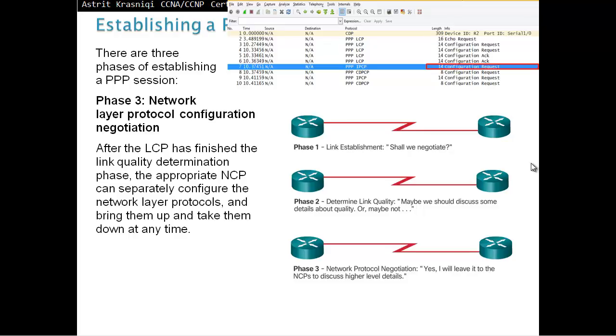So, phase 1 is link establishment. Shall we negotiate? The LCP. The phase 2 is optional. Determine the quality of the link. Maybe we should discuss some of the details about quality or maybe not. In phase 3, we bring the NCP. NCP will create a new NCP for each protocol being used. If the LCP closes a link, it informs the network layer protocol so that they can take appropriate actions.